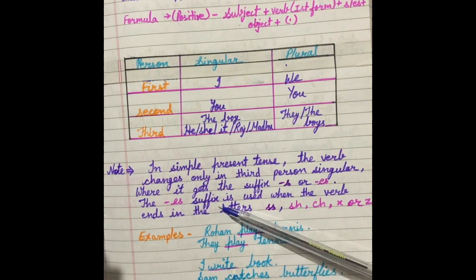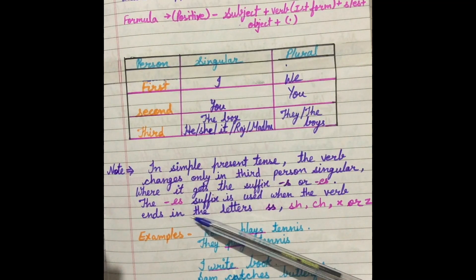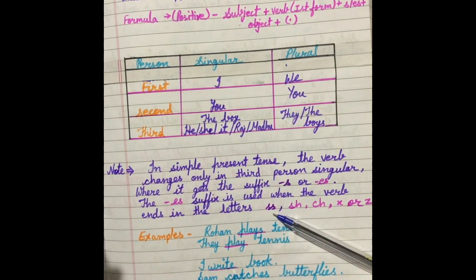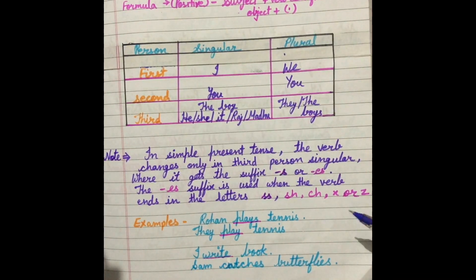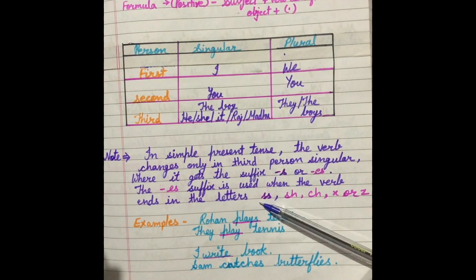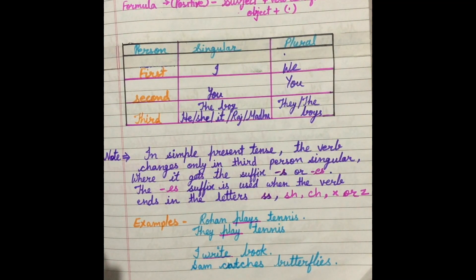The es suffix is used when the verb ends in the letters double-s, sh, ch, x and z. Then we add es with the verb. Now let's see some examples.